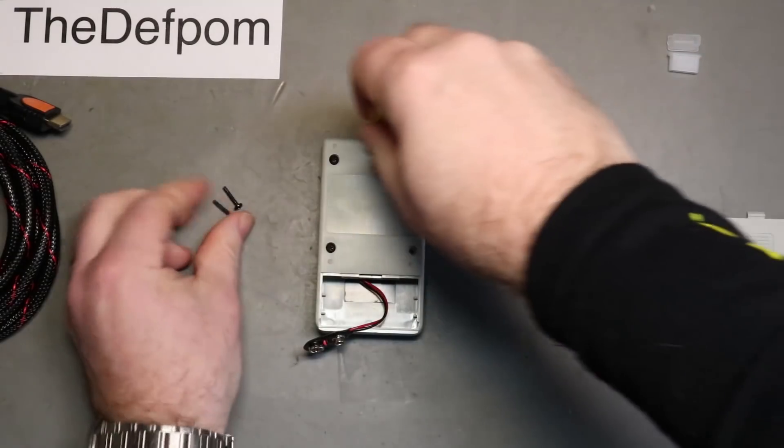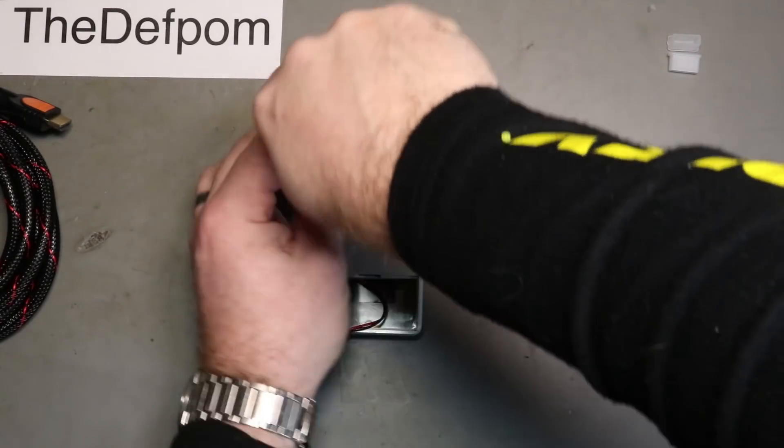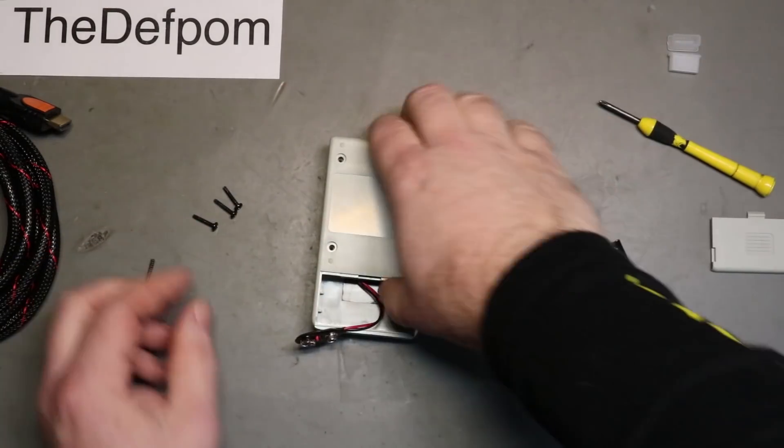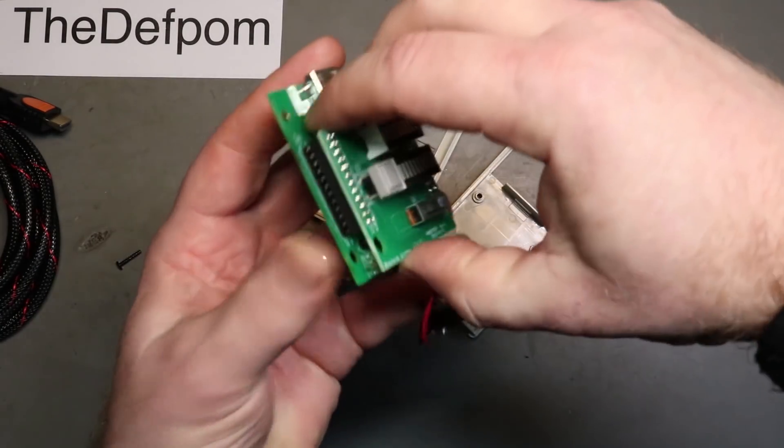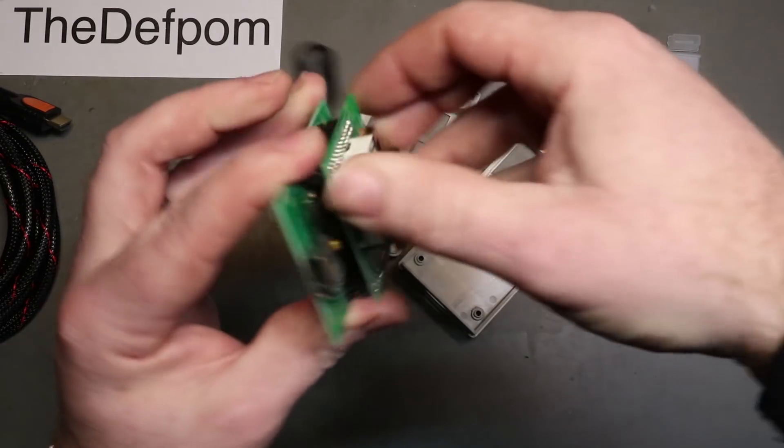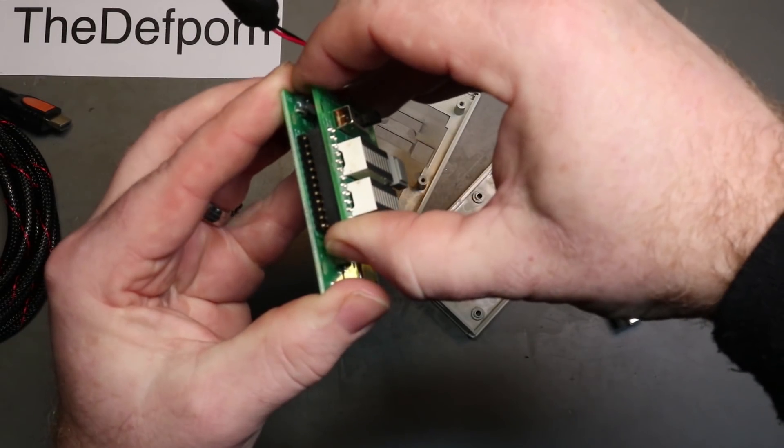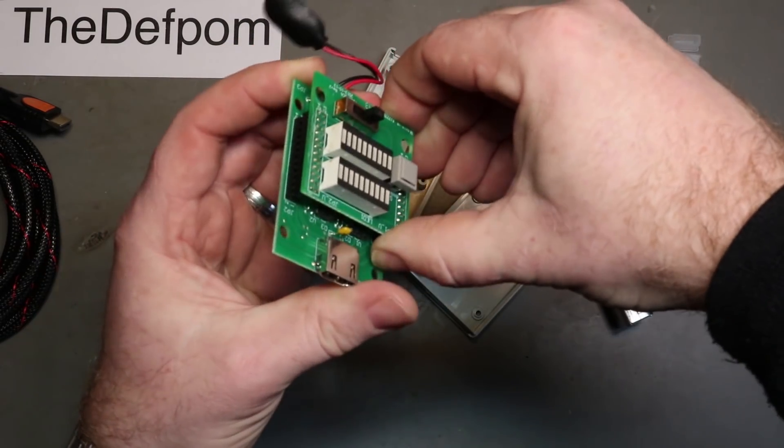I'll start by opening it up and there can't be much in it. Surely it must just be like a switching IC or something like in there. There we go, it's on headers even better. Pull these apart and we'll see if we can find anything wrong with it.